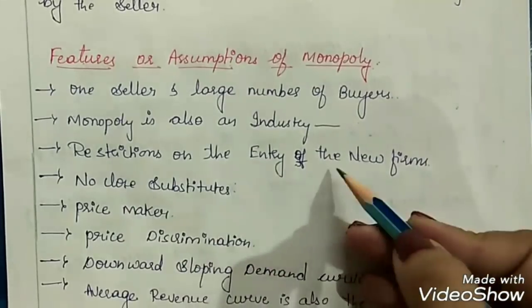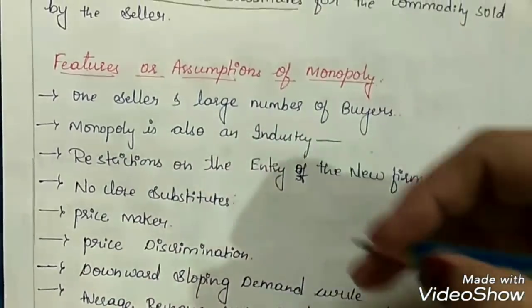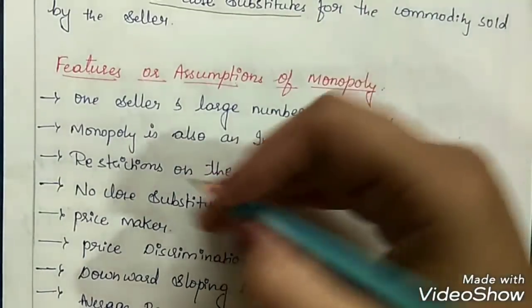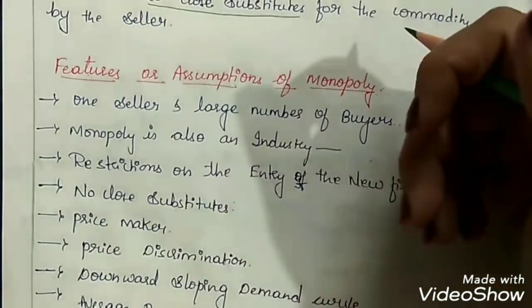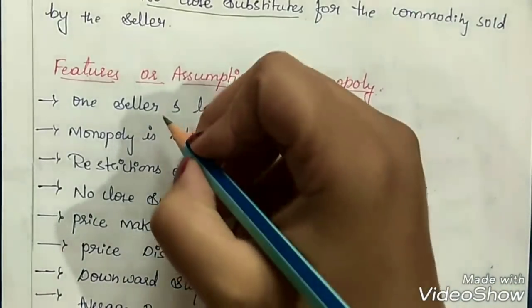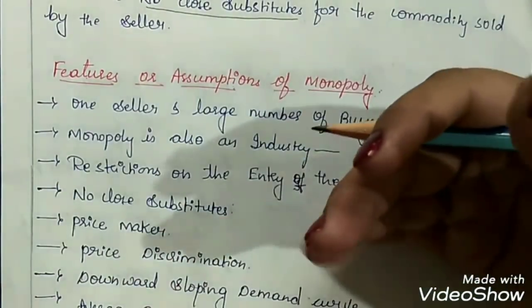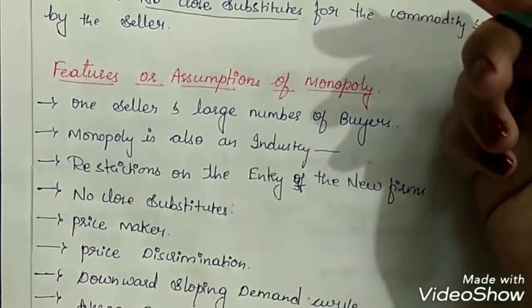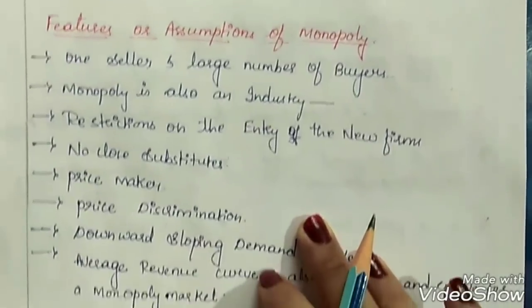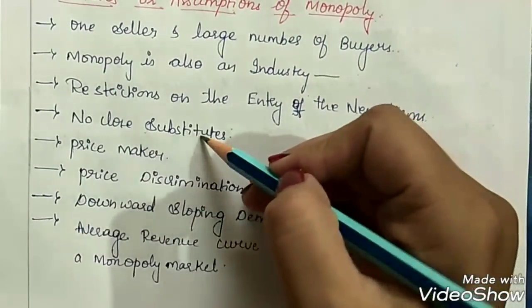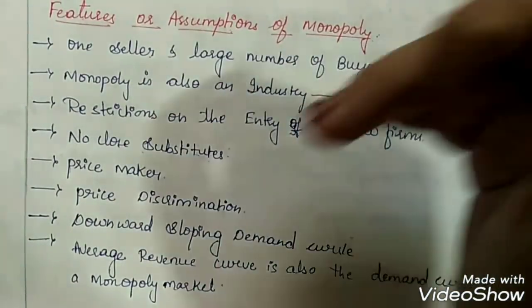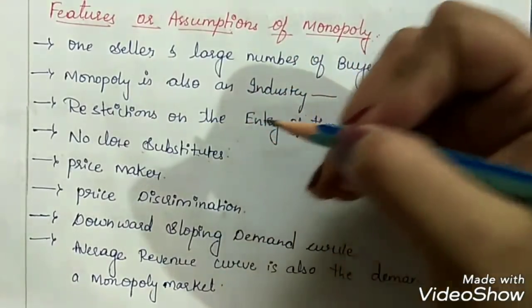Next, restrictions on entry of new firms. Here in this type of market, if any firm wants to enter, there are certain restrictions — it is not allowed for new firms to enter into this type of market. The reason is because there has to be only one seller. If any market wants to be called a Monopoly market, there has to be a single seller. Hence, there are restrictions on entry of new firms. Next, no close substitutes — there has to be no close substitutes for the commodities which are sold by the monopolist.